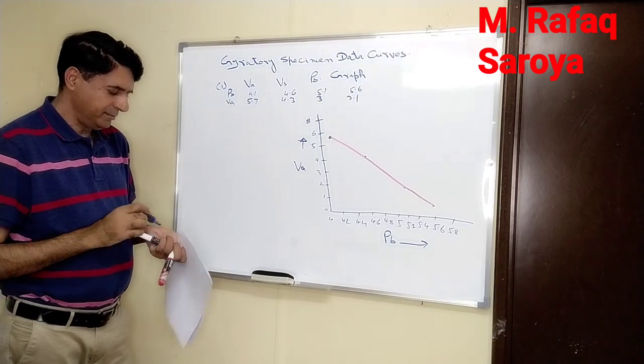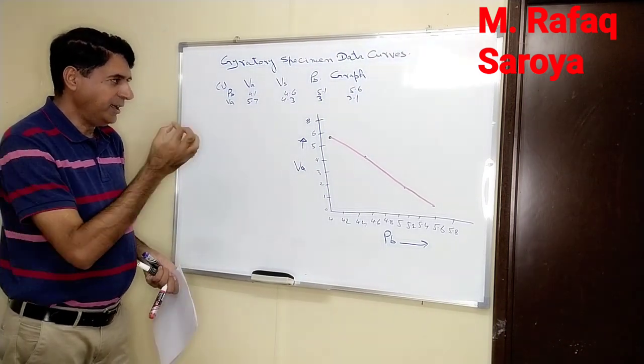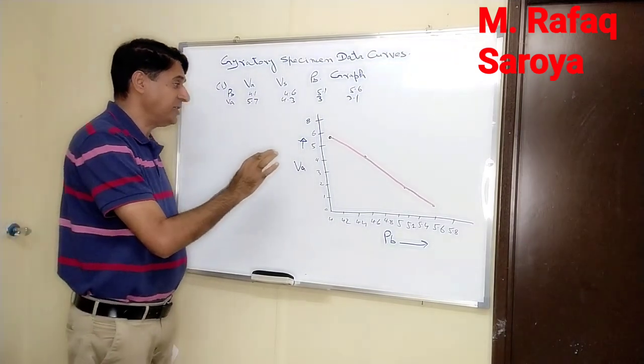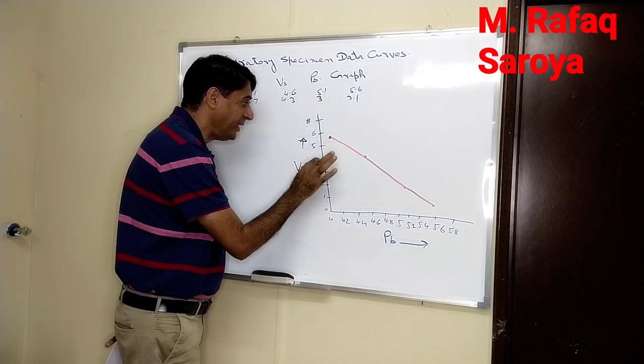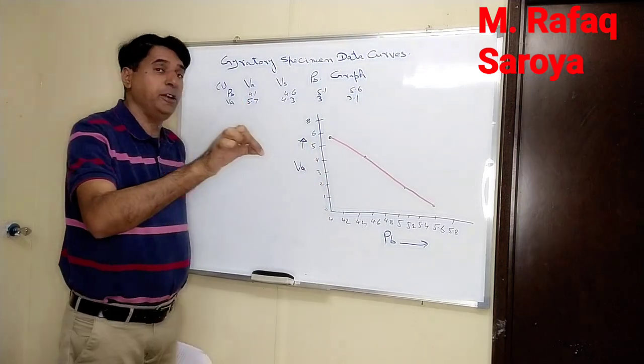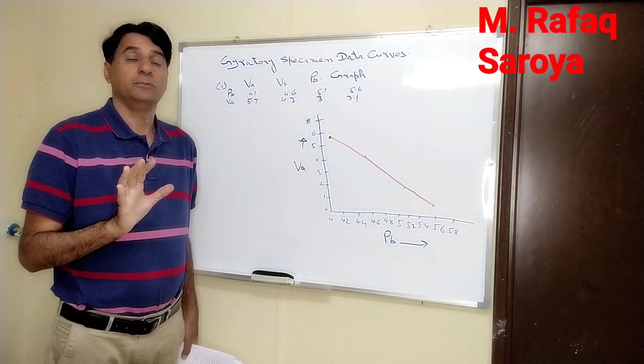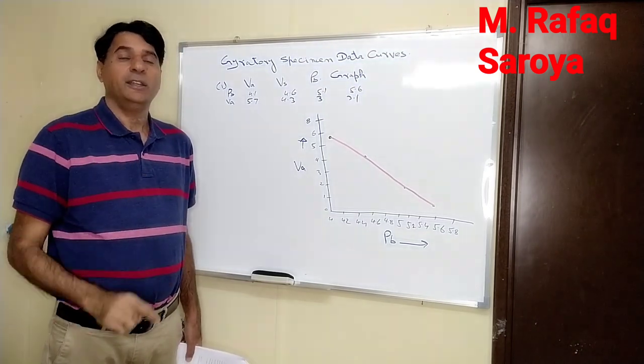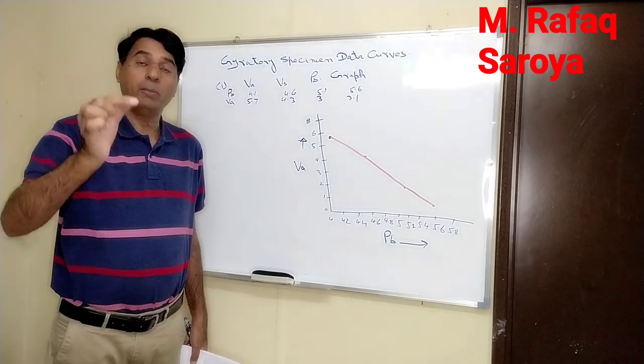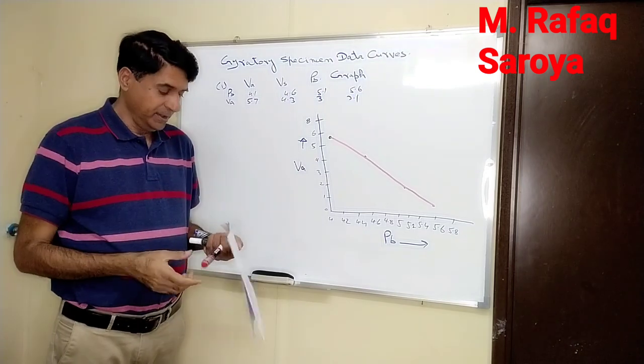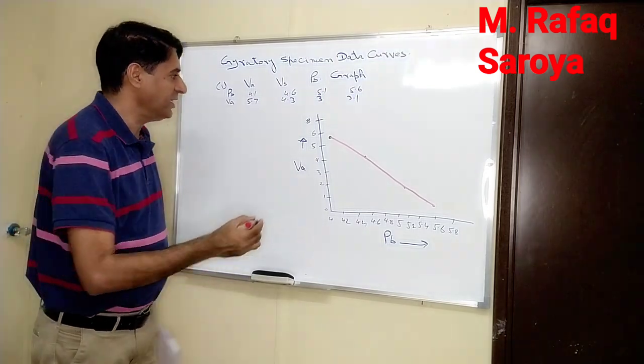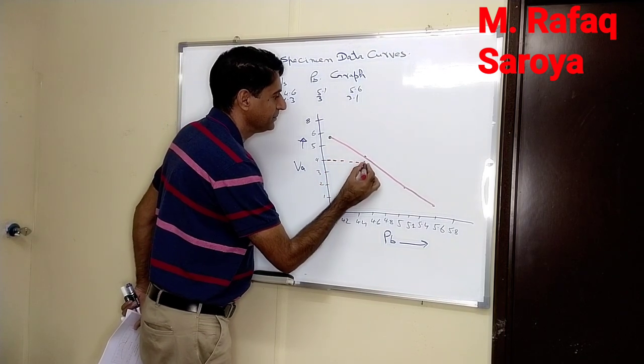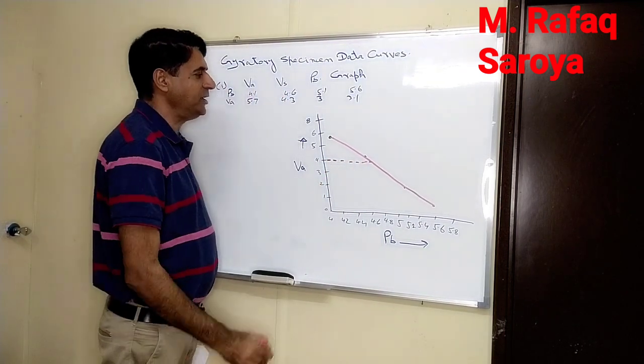Superpave specifications say 4% air void will be taken into consideration. 4% air void will be used to find out the amount of binder content. As per Superpave specification, I go to this point and touch at this location.